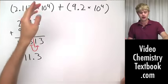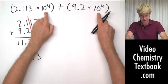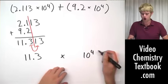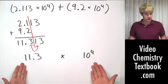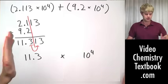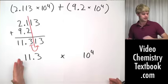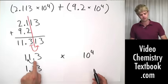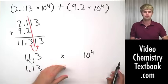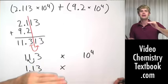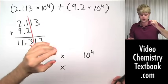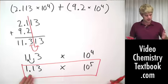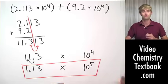Since it's addition, we just keep the 10 to the 4th — we don't add or subtract the exponents for addition and subtraction, it stays 10 to the 4th. So our result is 11.3 times 10 to the 4th. But is this correct scientific notation? No, because we want one digit to the left of the decimal. So we change 11.3 to 1.13 by moving the decimal one spot to the left. When we move the decimal to the left, we increase the exponent — so 10 to the 4th becomes 10 to the 5th. Now the final answer is 1.13 times 10 to the 5th, in correct scientific notation and rounded to the correct number of significant figures.